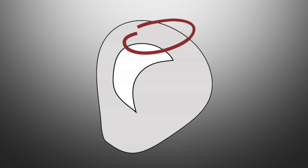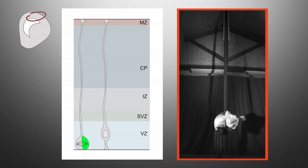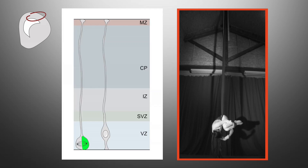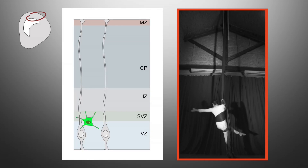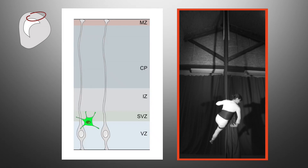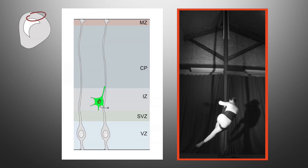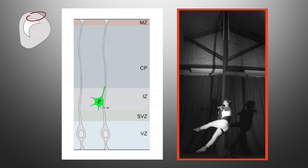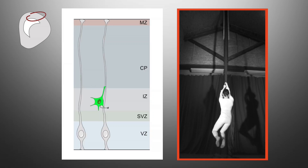During cortical development, progenitors divide, differentiate, undergo a multipolar-to-bipolar transition, and migrate along the radial glia to reach their final position, as illustrated by the acrobat on an aerial scenic.